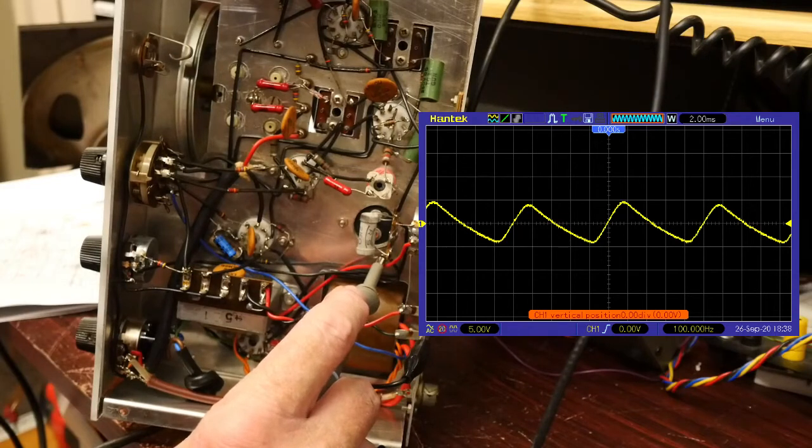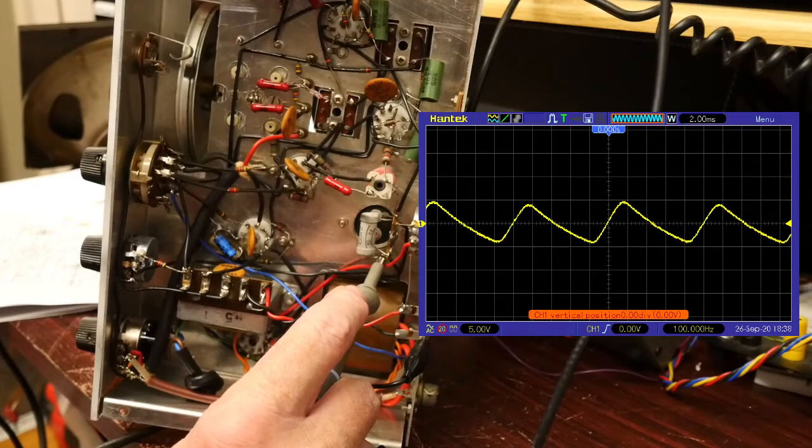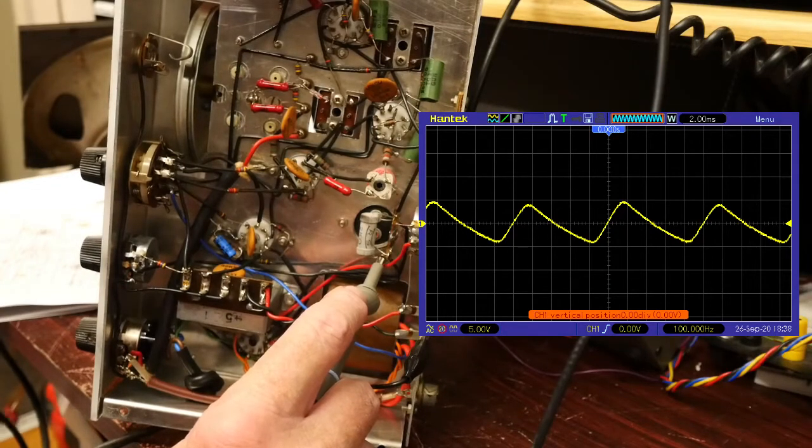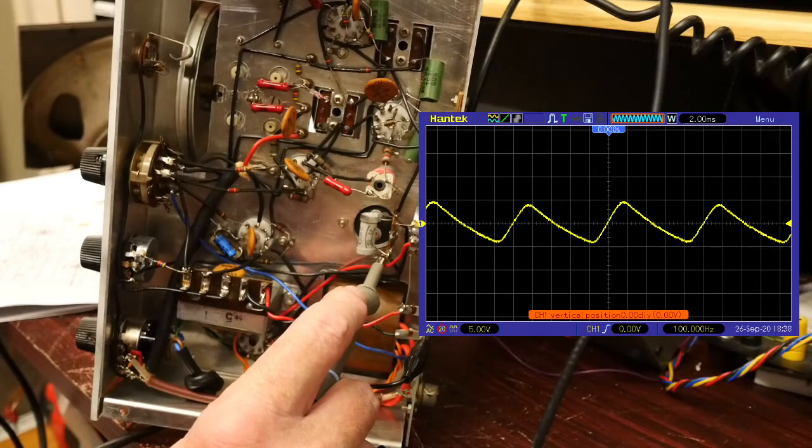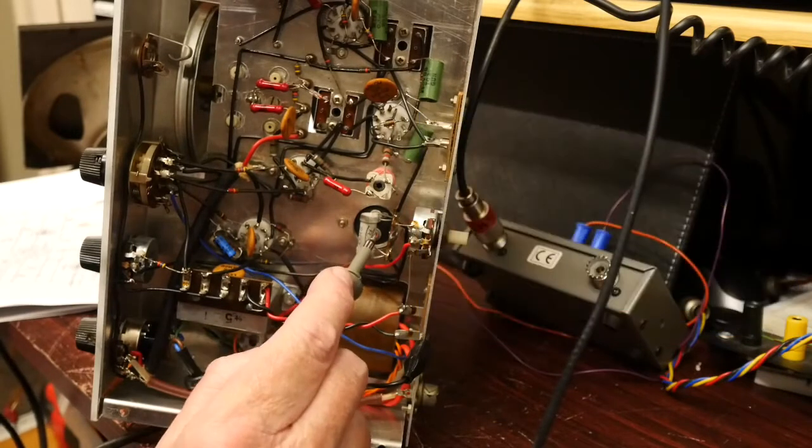I'm getting a ripple waveform which I'm now going to capture on the oscilloscope. You can have a look at the waveform here. As you can see, we're on five volts per division, so there's roughly a 10 volt ripple superimposed on the DC voltage on the cathode side of the capacitor.